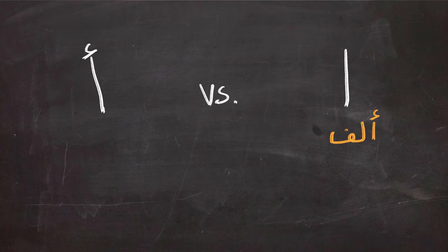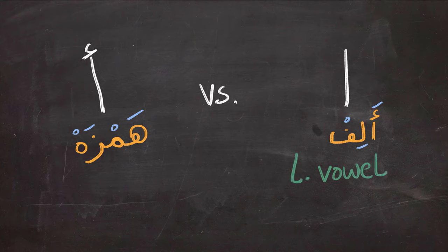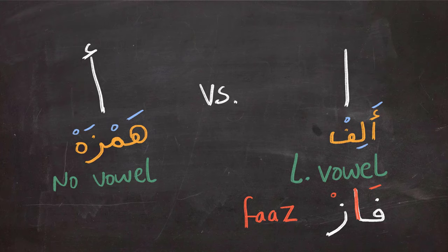So what is the difference between alif without Hamza and alif with Hamza? The one on the right is a long vowel. The one on the left is not a vowel and it gives the sound of a. As an example, on the right we say faz—a long vowel. On the left we say fa-ar. And this little stop in your throat, that is the a sound, the Hamza sound. This is the difference between alif and Hamza.